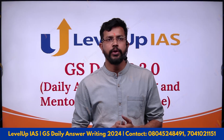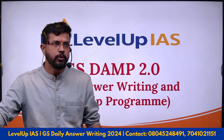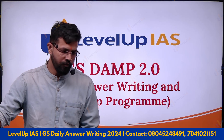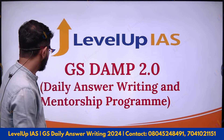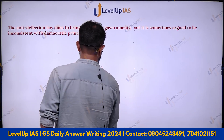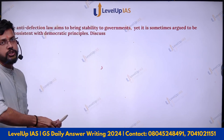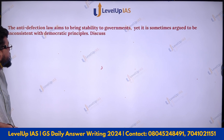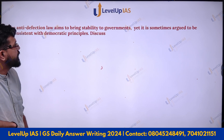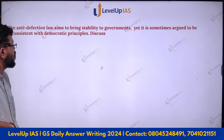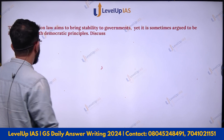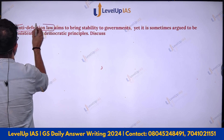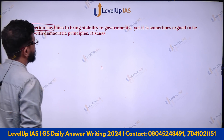Hello everyone. Today we are going to discuss how to decode the question — what to write, what not to write. So without wasting much time, let us start. The very first question here is the anti-defection law. It aims to bring stability to the government, yet it is sometimes argued to be inconsistent with democratic principles. Discuss.